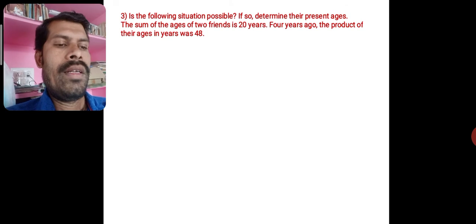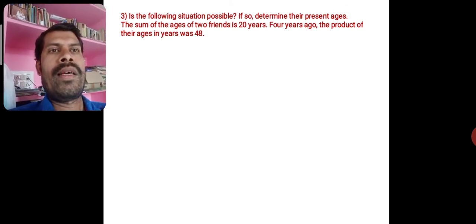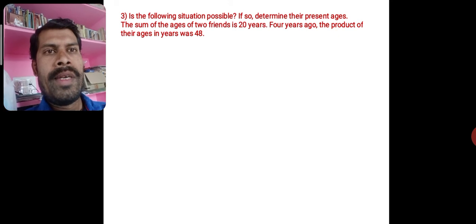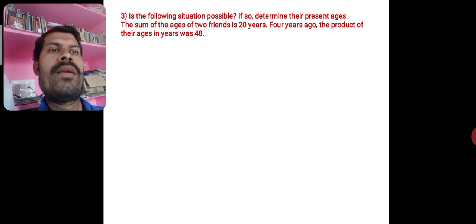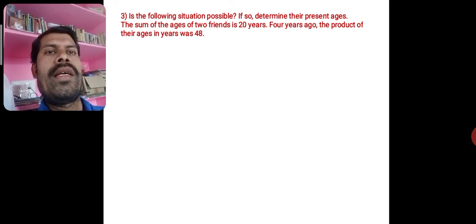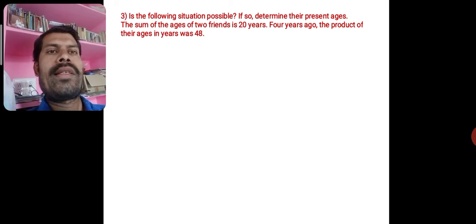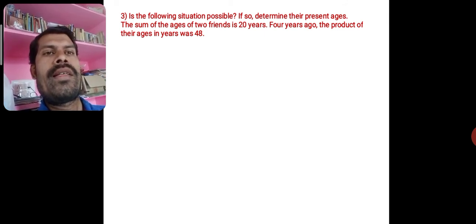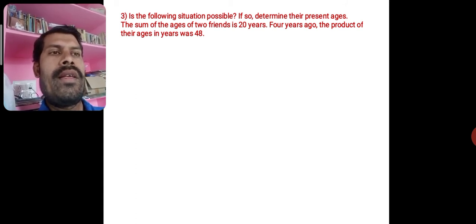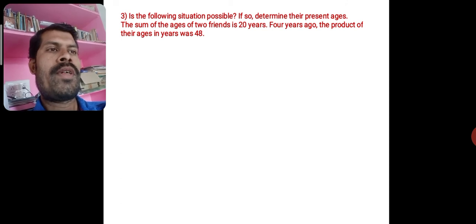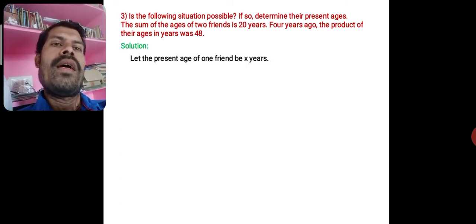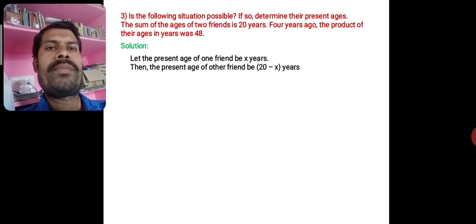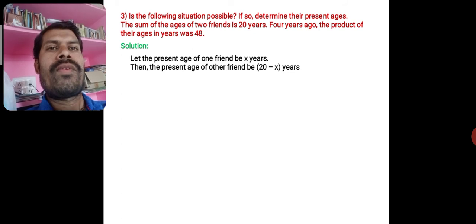Now we shall check whether the following situation is possible or not, using the discriminant. The situation is: the sum of the ages of two friends is 20 years. Four years ago, the product of their ages in years was 48. We have to find if this situation is possible. Let the present age of one friend be x years, and the other be 20 − x years.